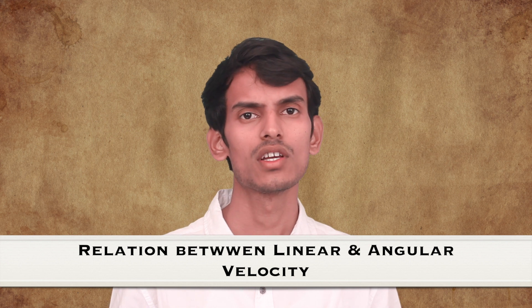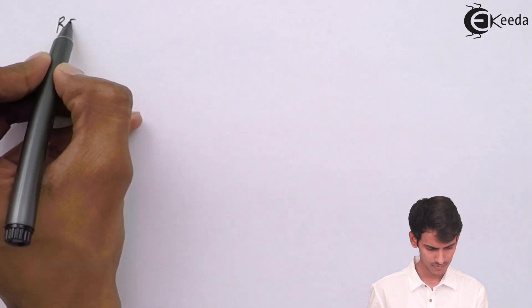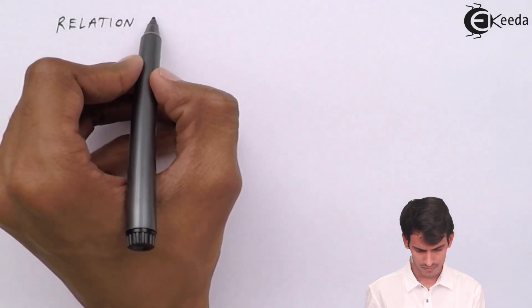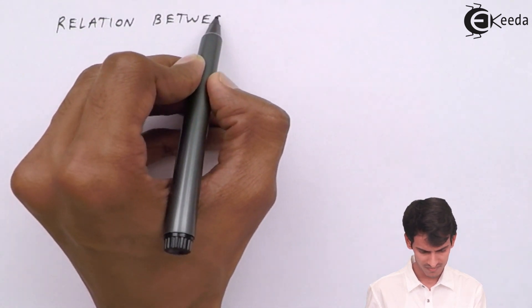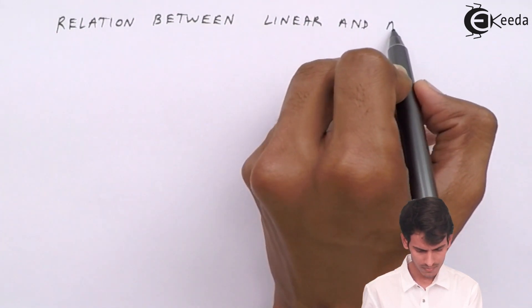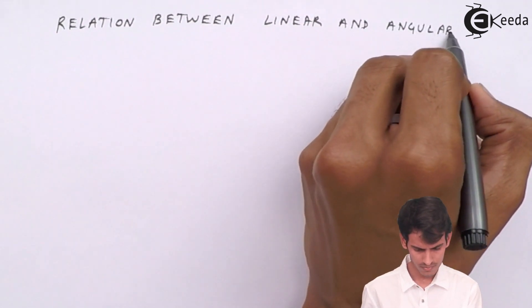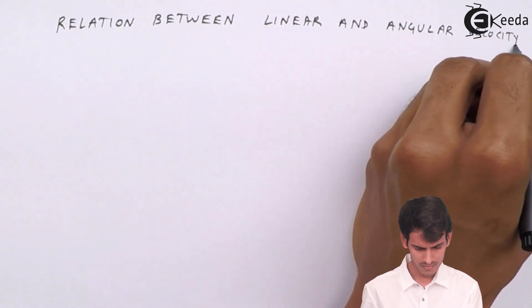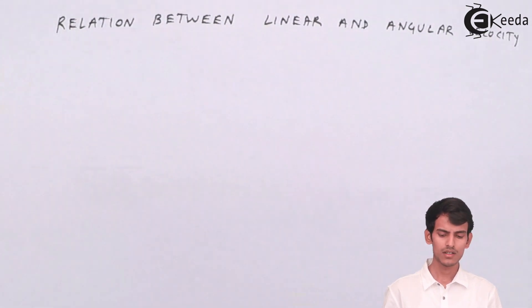So we've seen what linear velocity is, what angular velocity is. Let's see how they relate to each other. Linear velocity is denoted by V and angular velocity is denoted by Omega. So we will derive this relation between them.